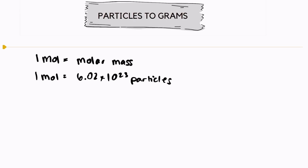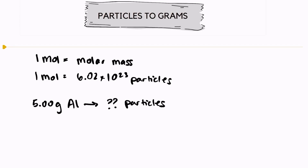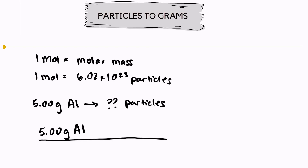Let's try an example. Let's say that I have 5.00 grams of aluminum, and I want to know how many particles are in that sample. We're going to need both of our unit conversions. We're going to start with 5.00 grams of aluminum, and the first thing we're going to do is convert our grams of aluminum into moles of aluminum.